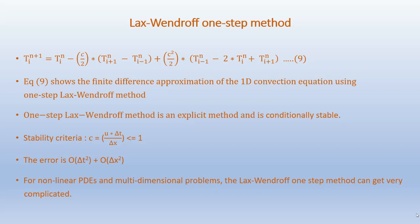This equation is the finite difference approximation of the 1D convection equation using the one-step Lax-Wendroff method. The one-step Lax-Wendroff method is an explicit method and is conditionally stable. The stability criterion is c equals u*Δt/Δx ≤ 1. The error is of order Δt² plus order Δx². For non-linear PDEs and multi-dimensional problems, the Lax-Wendroff method can get very complicated, so other suitable methods may be needed.